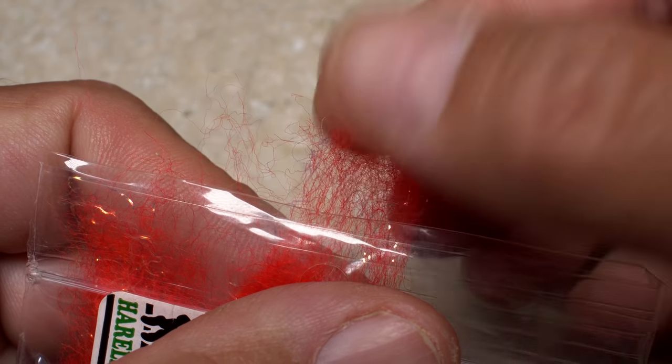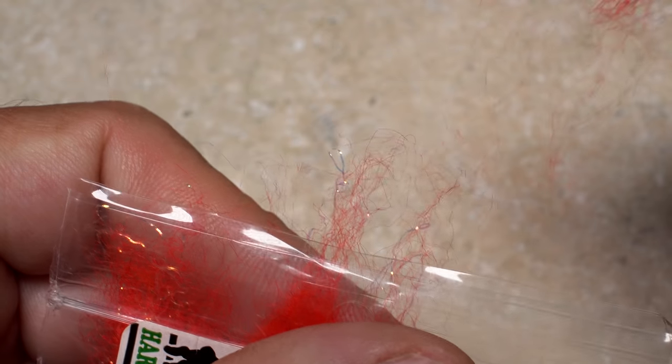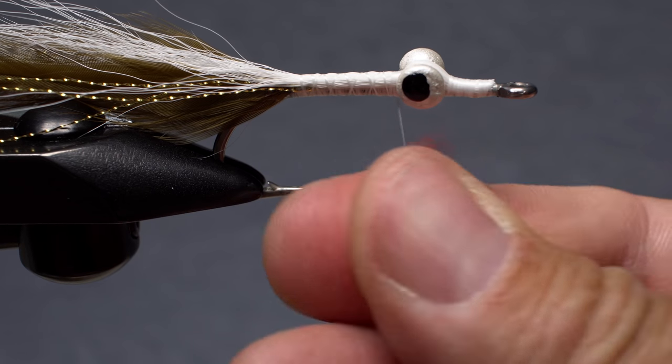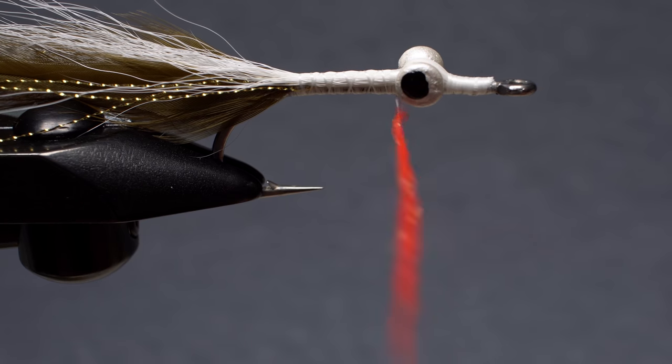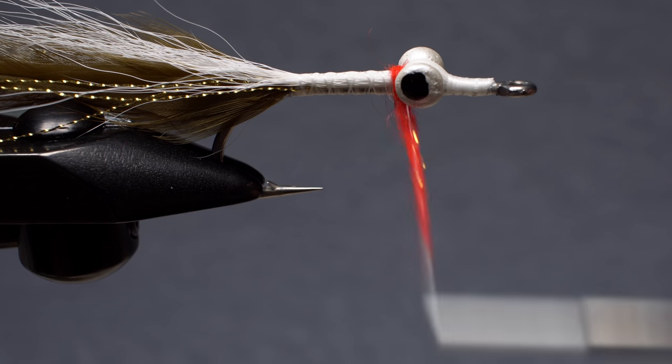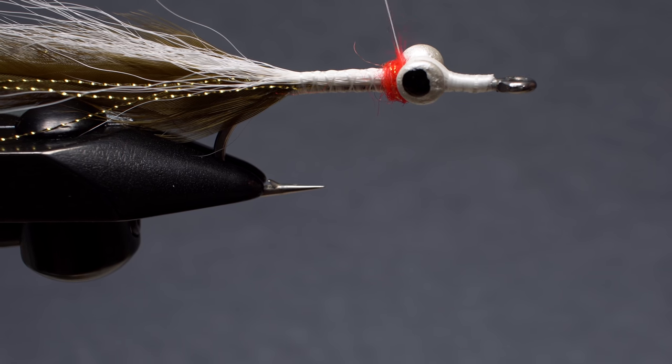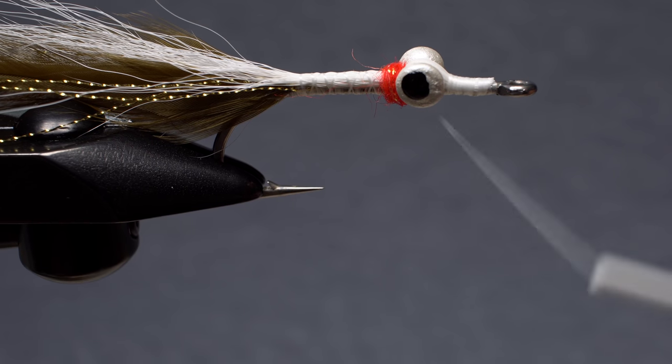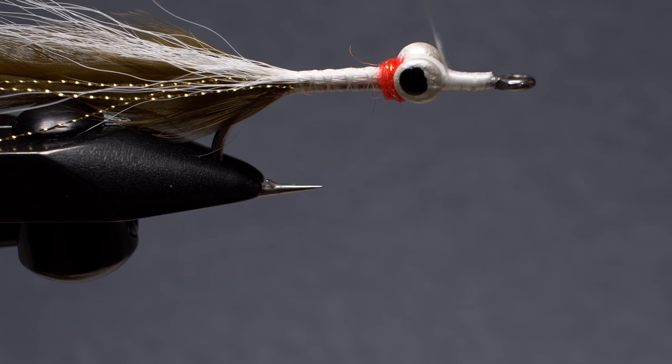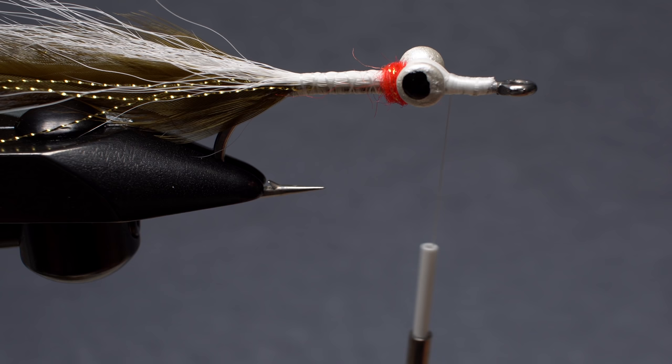Although certainly optional, I like to take just a small pinch of bright red dubbing and use it to create a thin dubbing noodle on my tying thread. A few wraps with the noodle to build up a short dub collar behind the eyes I think adds to the realism of the pattern, as it kind of looks like gills or a little bit of blood, as on a wounded baitfish.